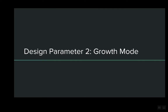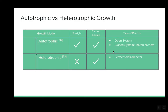The next design parameter is the growth mode. We found that our cultivating systems varied depending on the type of strain used. We identified two types of strains: heterotrophic and autotrophic. An autotrophic strain requires a source of light and carbon dioxide, and is cultivated in photobioreactors. A heterotrophic strain does not require light, but requires an organic compound feed as its carbon source, produces carbon dioxide, and is cultivated in a fermenter.